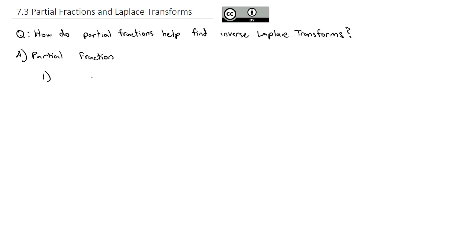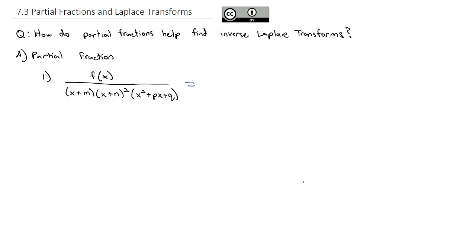The idea of partial fractions — summarizing an hour-long video into one small example — is that we've got some function in the numerator and the denominator can be factored, maybe to (x plus m) times (x plus n) squared times maybe an x squared plus px plus q. We break this up into partial fractions because each part is easier to take the inverse Laplace transform of. Each factor gets its own numerator, so we put a letter A over any normal linear denominator, like A over (x plus m).